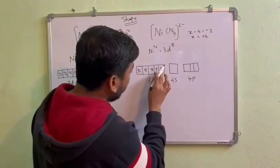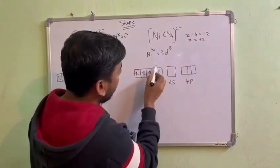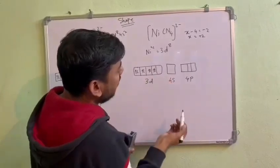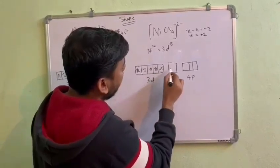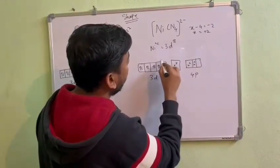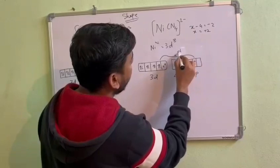It will go to here, so it will be like this. So here, what is your hybridization? Hybridization will be dsp2 - one, two, three, four, since four ligands are there.